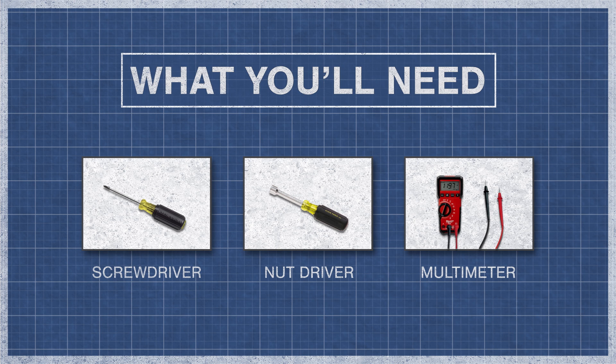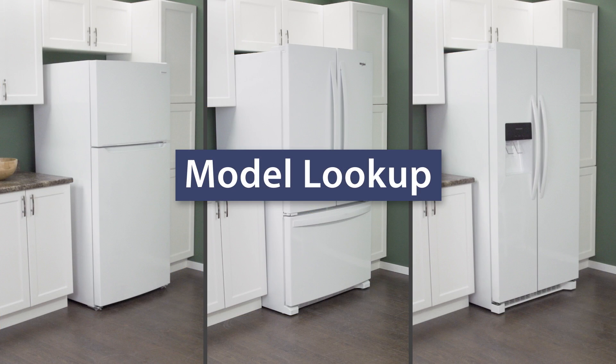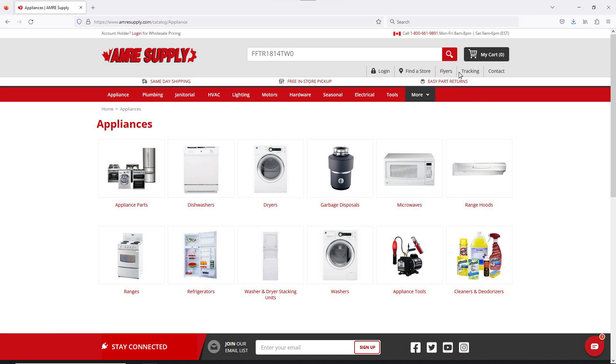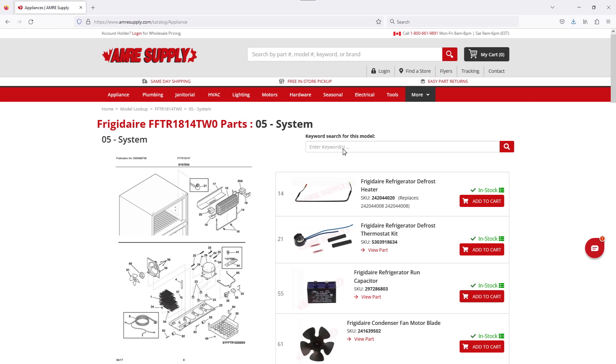To begin, you might need a screwdriver or nut driver and a multimeter. Keep in mind, there are several types of relays. Enter your model number on the AMRE supply website. This will show a parts breakdown with the exact replacement parts listed on the side.